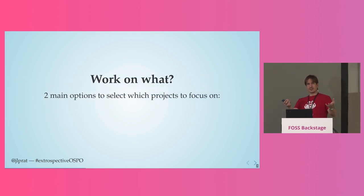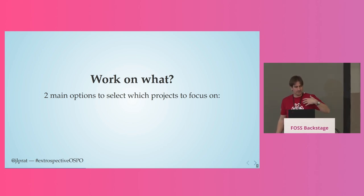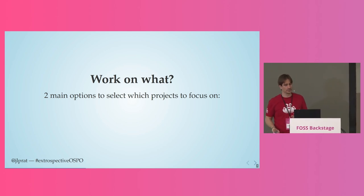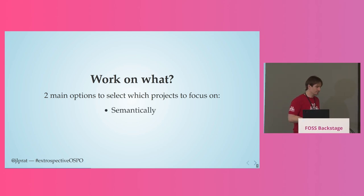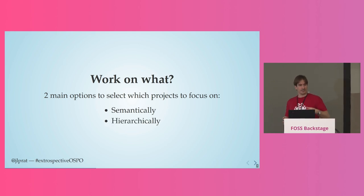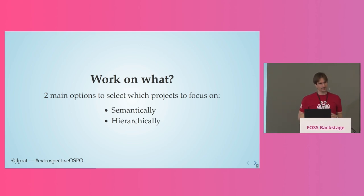You might say: let's create a team that works only on open source projects — but which ones? There are two main options for selecting projects to focus on. The first is to pick them semantically, meaning what makes sense for your business. The second is hierarchically — you get your first level, second level, third level, fourth level, up to the 25th level, and try to cover as much as you can.